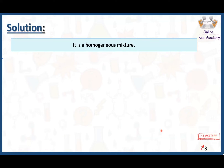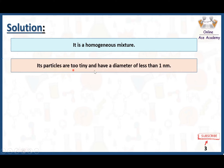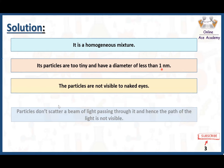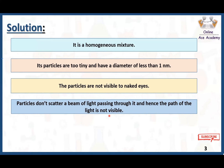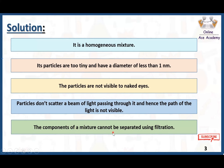Some properties of a solution: it is a homogeneous and uniform mixture. Its particles are too tiny and have a diameter of less than one nanometer, so we are unable to see them with the naked eye. The particles don't scatter a beam of light passing through it, and hence the path of the light is not visible, because the particles of the solution are very small and they don't scatter a beam of light.